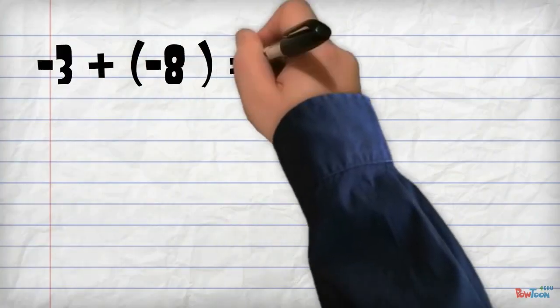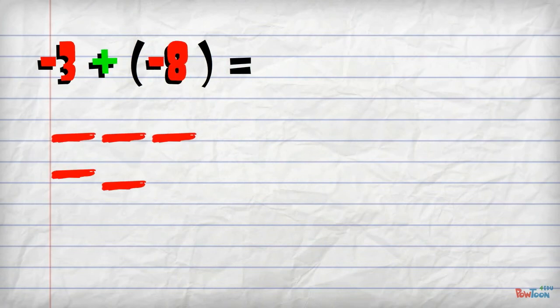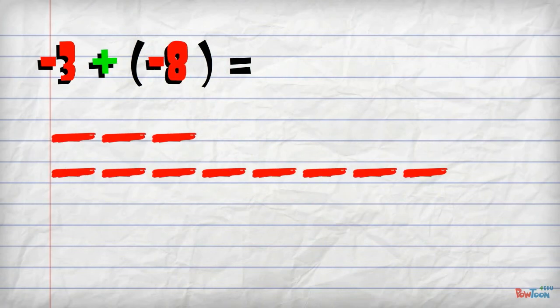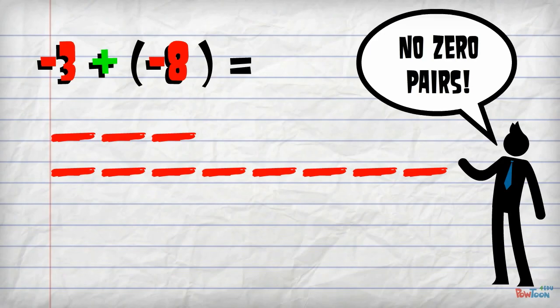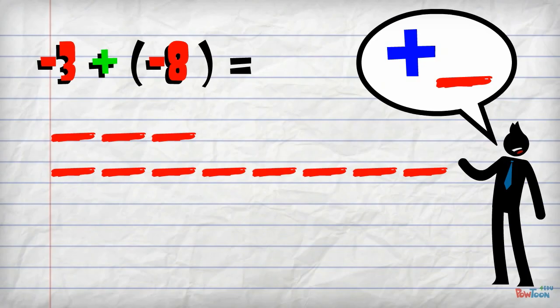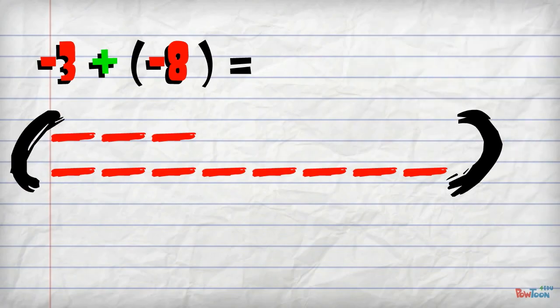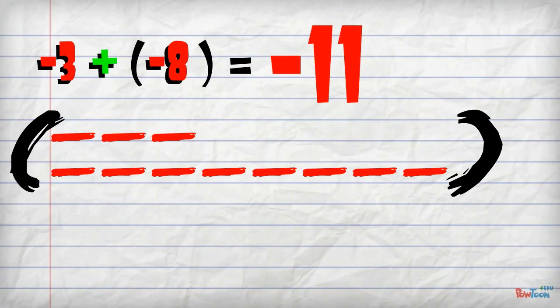Let's look at one more: negative 3 plus negative 8. We start with 3 negative tiles, then add on 8 negative tiles. In this case, there are no zero pairs. A zero pair must be a positive tile paired with a negative tile. Since there's nothing that cancels out, we just circle all the tiles. Our answer is 11 negative tiles, or negative 11.